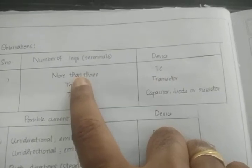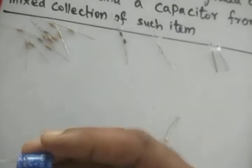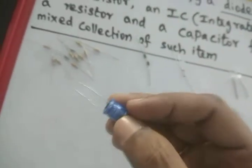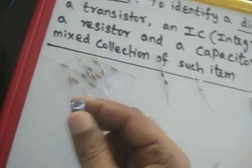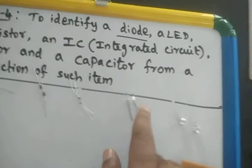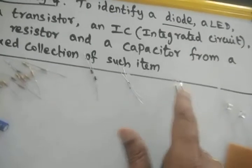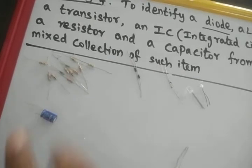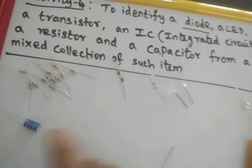In the observation part, you have to note the number of legs of each device. Two legs means it may be a capacitor, diode, or resistor. Three legs means only one component — the transistor. More than three legs means IC. The capacitor can be identified by the microfarad value printed on it — for example, 100 microfarad. Farad is the SI unit. Resistors also have two legs, as do all diodes including LED, PN junction diode, and Zener diode.